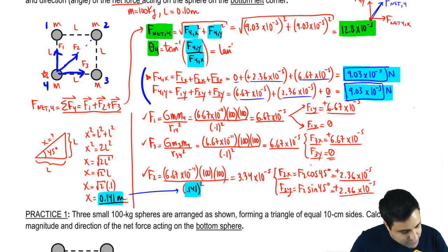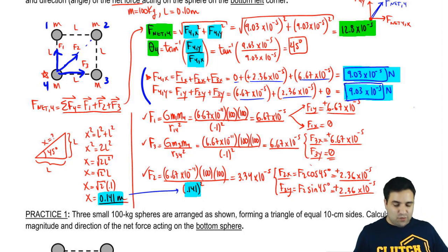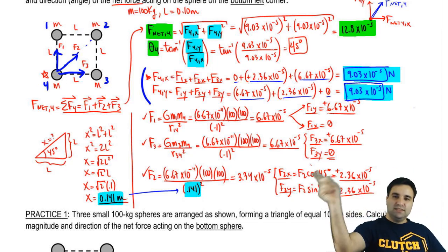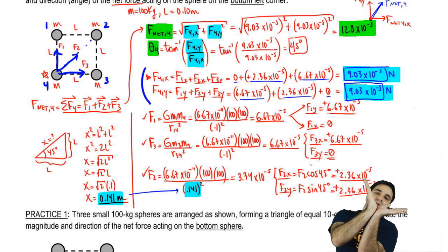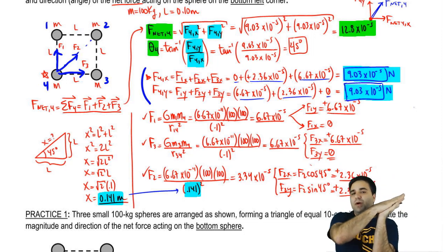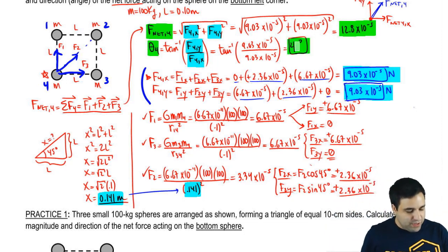When you do this here, you get the arc tangent of 9.03 times 10 to the negative 5th over 9.03 times 10 to the negative 5th. I hope you see that this is just 1. So it's the arc tangent of 1, which is 45. And it's 45 not because F2 is 45, but because this is fully symmetric. That this is 45, but also these two here, the x and y have the same magnitude. So the net result of these two is right down the middle, plus the guy that's down the middle as well. So it should make sense that this is a 45.